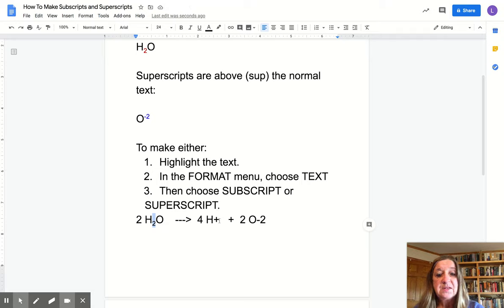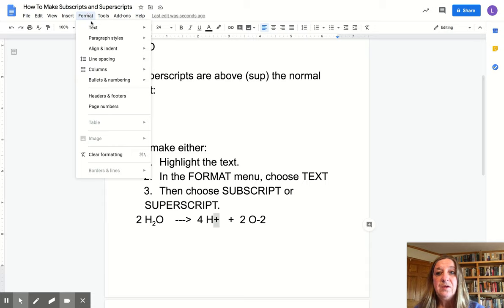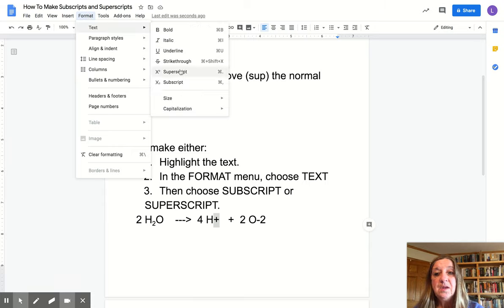You can also make a superscript this way. I'm going to do that right here with this plus by the H. I'm going to highlight it, go up to the format menu, and in text, I'm going to choose superscript.